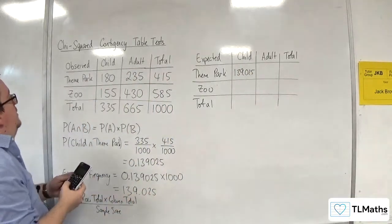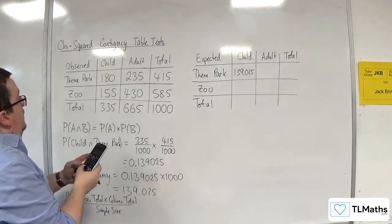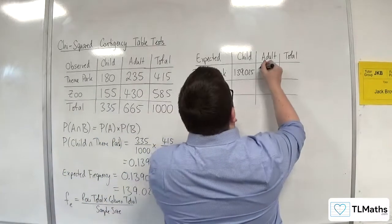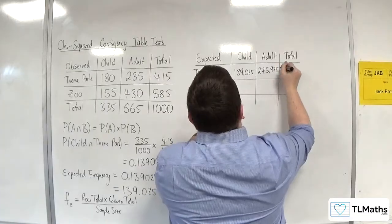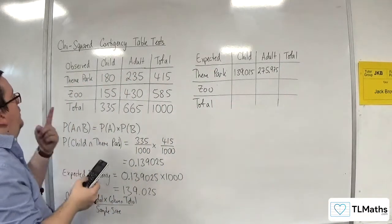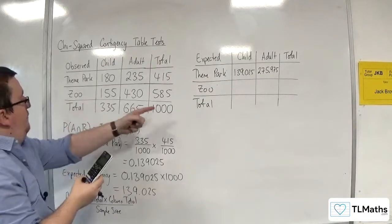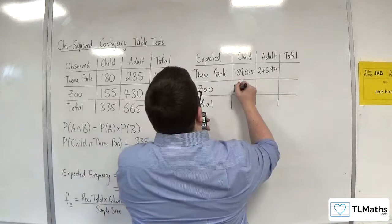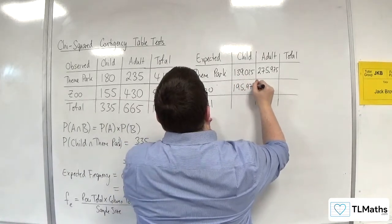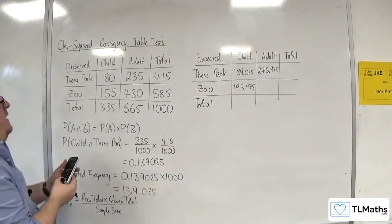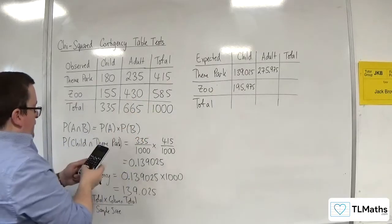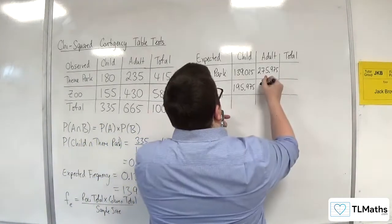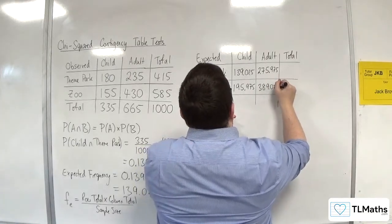So for adult, it would be 415 times, so adult theme park, 415 times 665 divided by 1000. So this would be 275.975. And a child for the zoo would be 585 times 335 divided by 1000, so 195.975. And then the adult for the zoo would be 585, the row total, times by the column total, 665, divided by 1000. So we get 389.025.